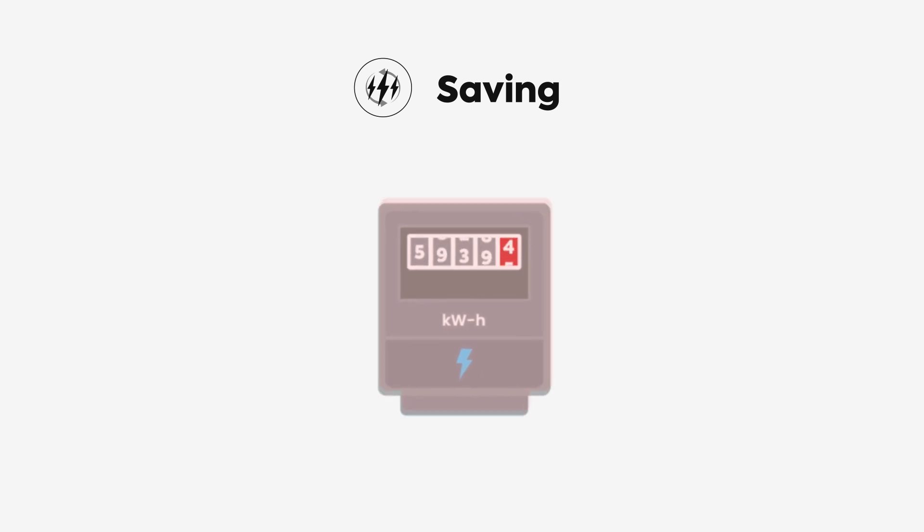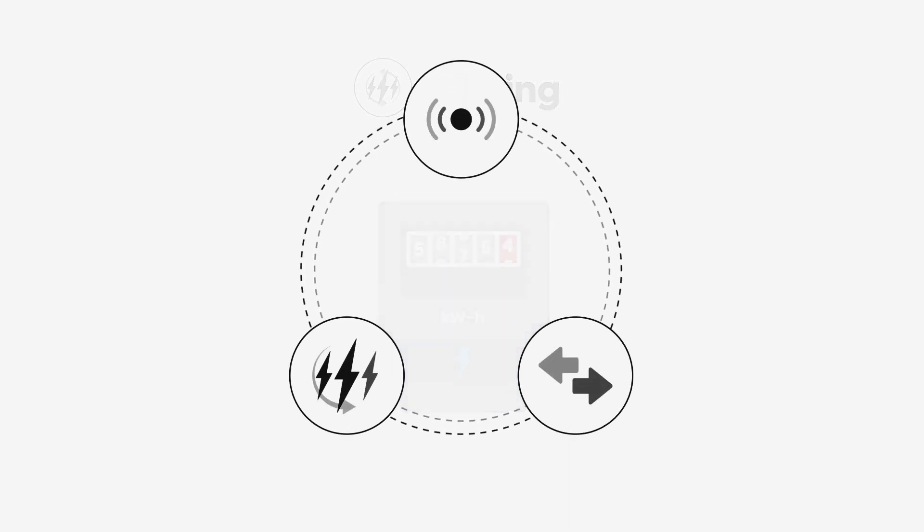By making your refrigeration and HVAC systems run more efficiently, you save on your energy usage. And when you combine the three S's, the result is lower energy bills.